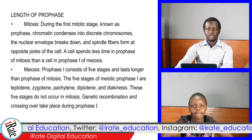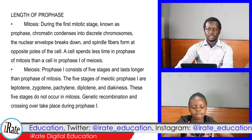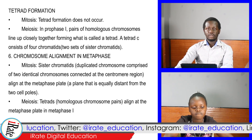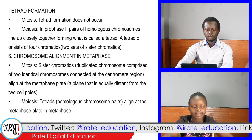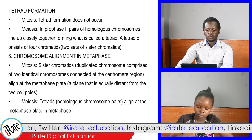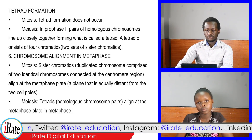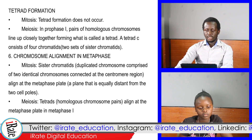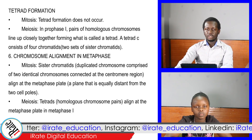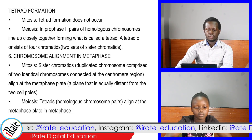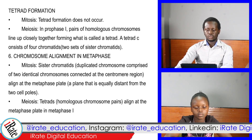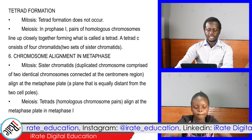Genetic recombination and crossing over take place during prophase I. Point 5: Tetrad formation. In mitosis, tetrad formation does not occur. In meiosis, during prophase I, pairs of homologous chromosomes line up closely together forming what is called a tetrad. A tetrad consists of four chromatids — that is, two sets of sister chromatids.